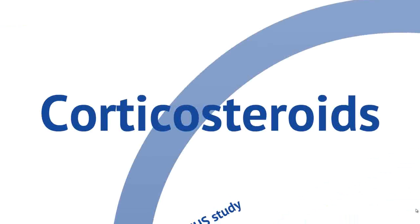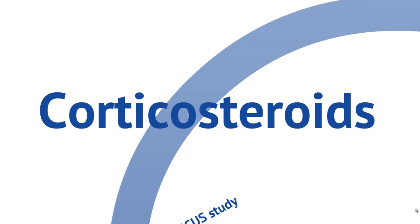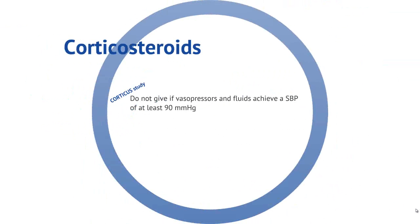Now let's talk about corticosteroids. It is important to understand when steroids should be used. Do not give steroids if both vasopressors and fluids are able to achieve a systolic blood pressure of at least 90, because the CORTICUS study has shown no improvement in morbidity and mortality.